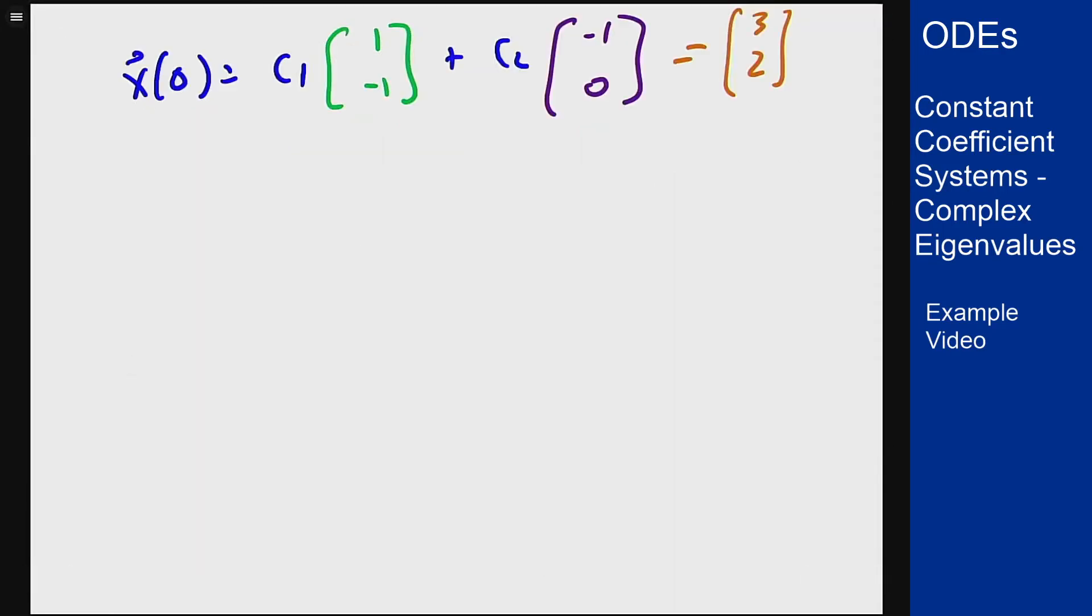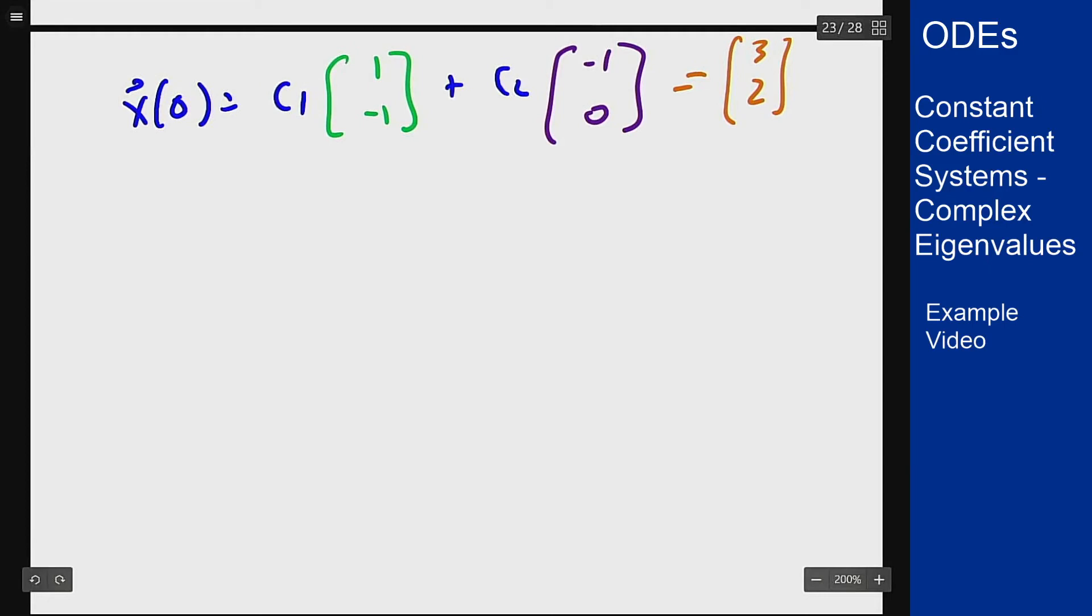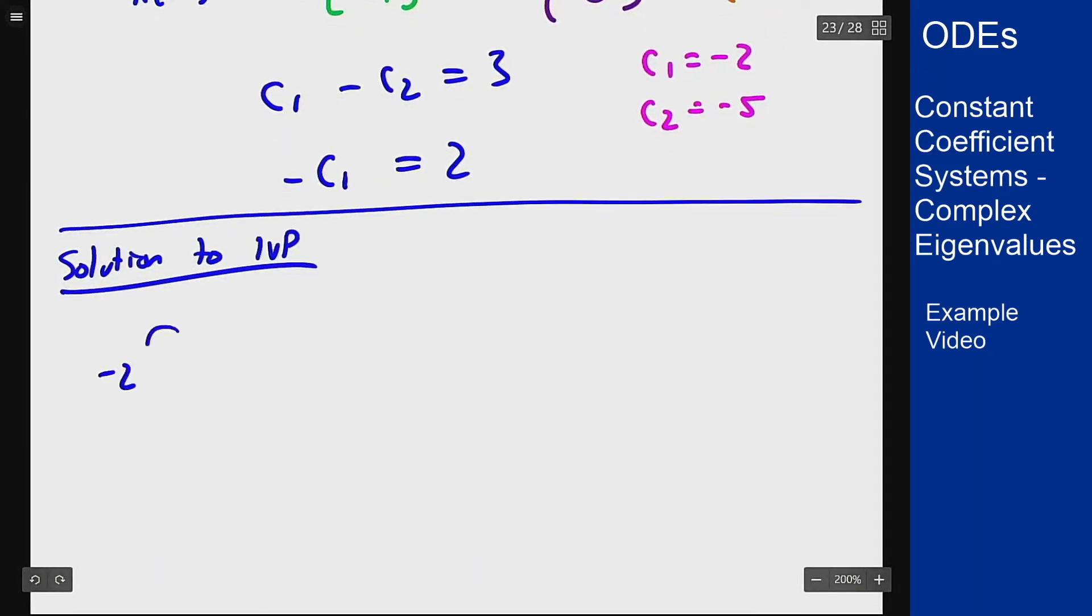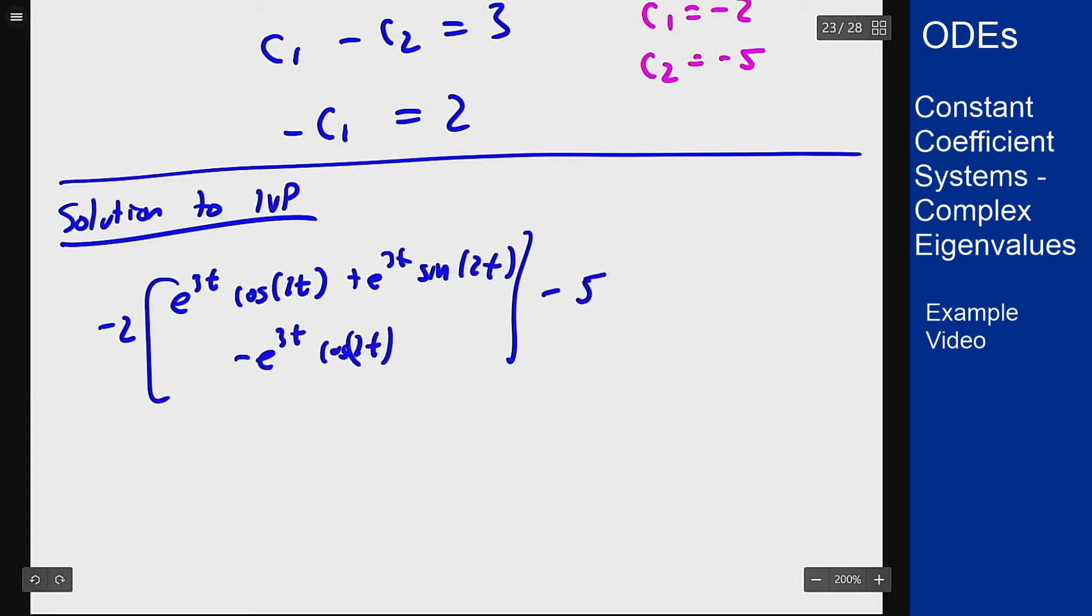If I write this as a system I would get that c₁ - c₂ = 3 and -c₁ = 2, which means that c₁ is -2 and therefore c₂ must be -5. So that means my solution to the actual problem is -2 times that first term and -5 times the second term.